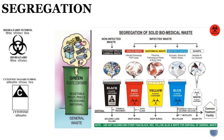For segregation of solid biomedical waste, different color-coded bags are used — you'll see these in colleges too. Waste is divided into non-infected and infected. Non-infected has two containers: green and black. The green plastic container is for general waste — vegetable peels, fruit peels, packaging material. The black container is for discarded medicines and cytotoxic drugs.